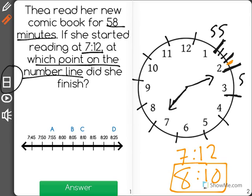Now, looking at our number line, I can see 8:10 is point C. That is your correct answer.